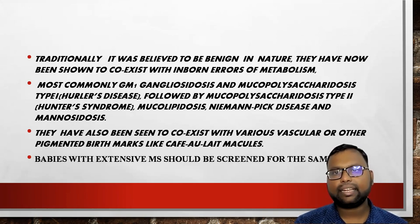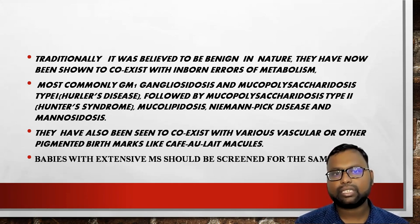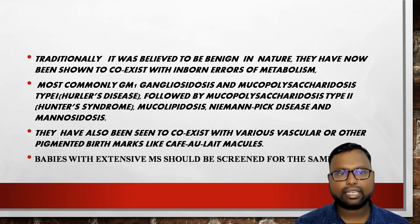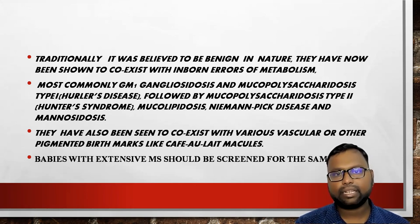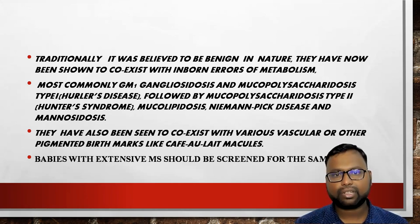Traditionally, Mongolian spots were believed to be benign in nature. Now they have been shown to coexist with some inborn errors of metabolism. The common ones include gangliosidosis GM1, mucopolysaccharidosis type 1 Hurler and type 2 Hunter. Others include mucolipidosis, Niemann-Pick disease, and melanocytosis. They have also been found to coexist with various vascular and other pigmented birthmarks like café-au-lait spots. If you find any of the above, you should screen the baby accordingly.